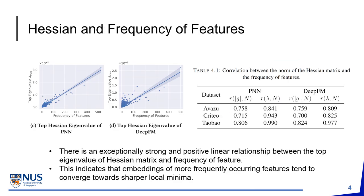We investigate how these two challenges affect the optimization of CTR prediction models. We train two popular CTR prediction models with Adam and calculate the Hessian metrics after they have converged. Our analysis demonstrates a significant positive linear correlation between the top Hessian eigenvalue and feature frequency, indicating that embeddings of more frequent features tend to converge towards sharper local minima.